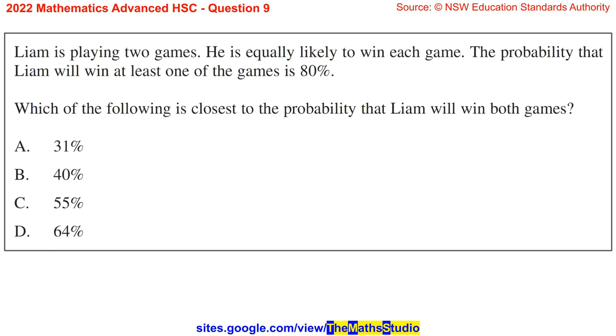Question 9. Liam is playing two games. He is equally likely to win each game. The probability that Liam will win at least one of the games is 80%. Which of the following is closest to the probability that Liam will win both games?